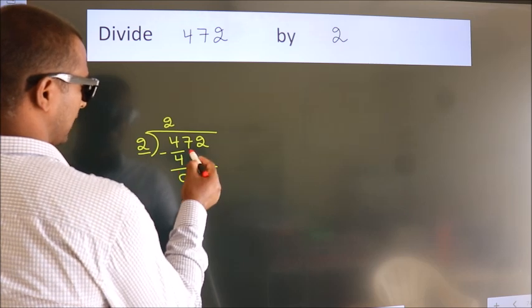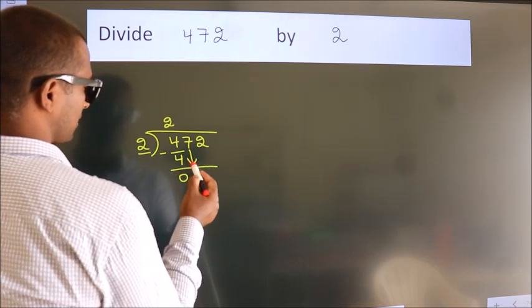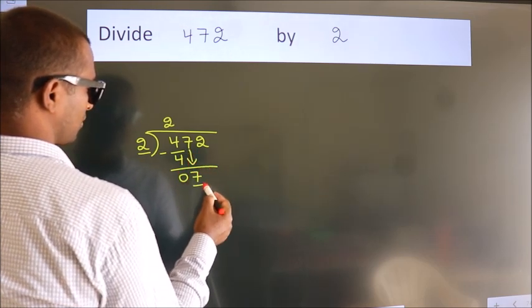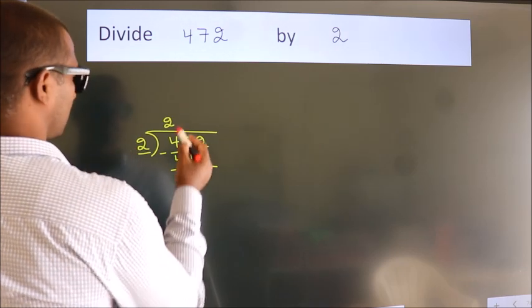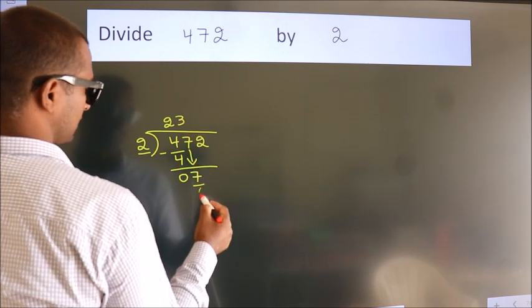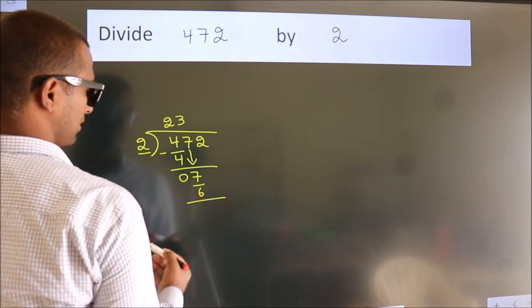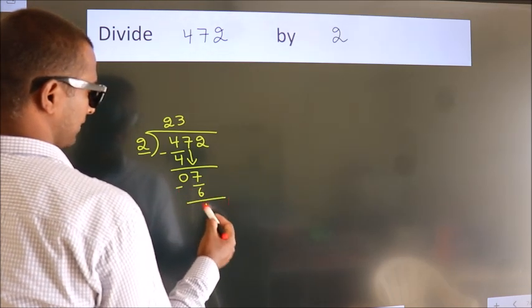After this, bring down the beside number. So 7 down. So 7. A number close to 7 in 2 table is 2 times 3, 6. Now we subtract. We get 1.